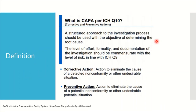We will understand what CAPA is as per ICH Q10. It is a structured approach — when you do investigations and as part of the outcome, you identify the root cause. The intent of the investigation should be to identify the most desirable cause. Whenever you are correcting those causes, that is called corrective actions — actions which eliminate the cause detected in the non-conformance. Preventive actions involve potentially identifying all non-conformances which could cause events or problems to arise in your process — all potential undesirable situations need to be addressed through preventive actions.